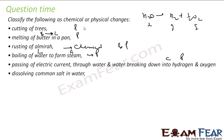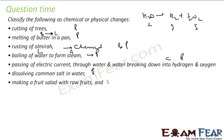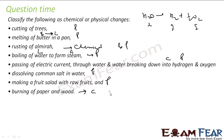Dissolving common salt in water is a physical change — there is no chemical reaction involved. Cutting fruit salad with raw fruits is also a physical change — you are changing the physical property of the fruit from big fruit to small pieces. Burning of paper and wood: paper is converted to heat energy — that is a chemical change. Also, paper turns to ashes — that's a physical change as well.